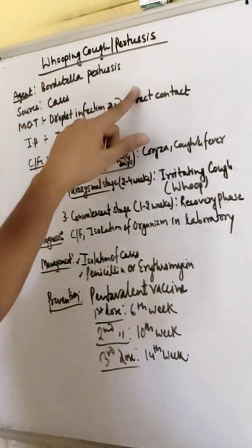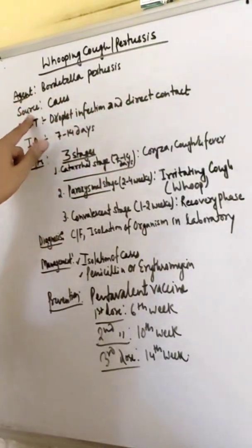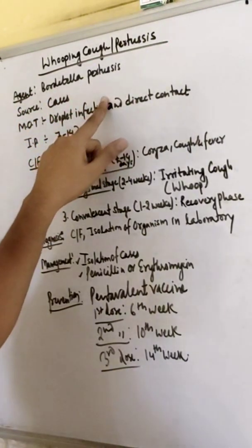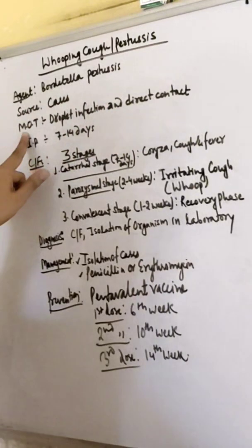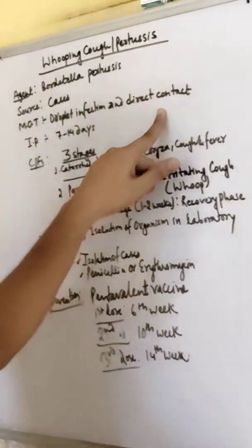The causative agent is Bordetella Pertussis. What is the source? Cases. Those who suffer from Pertussis can transmit to other children. Mode of transmission is droplet infection and direct cough contact.